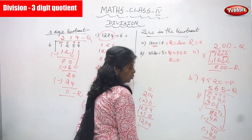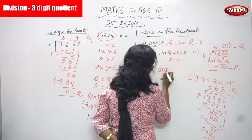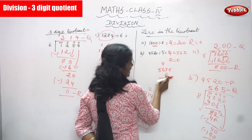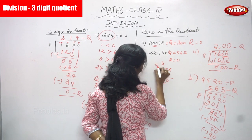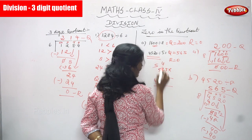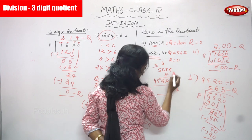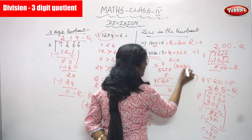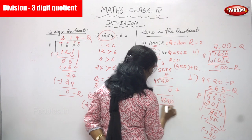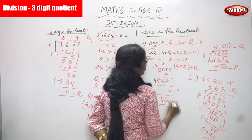Check the answer: multiply quotient 565 by divisor 8. 8 × 5 = 40, write 0 carry 4; 8 × 6 = 48, plus 4 = 52, write 2 carry 5; 8 × 5 = 40, plus 5 = 45. Result: 4520 — that is the dividend. Add remainder 0: still 4520. The quotient 565 and remainder 0 are both correct.